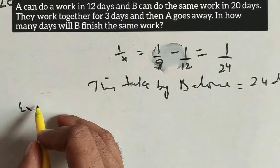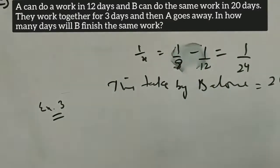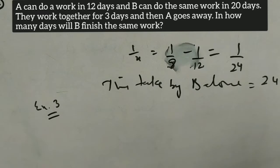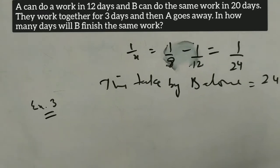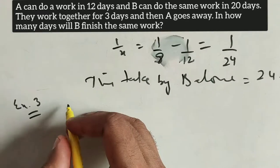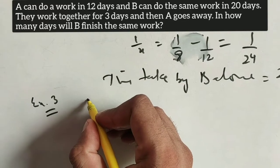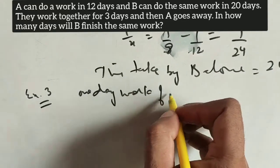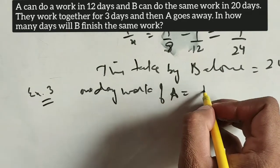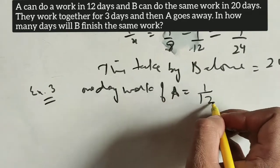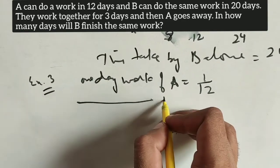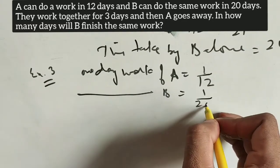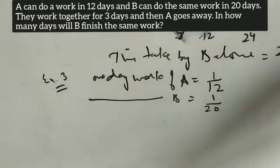Example 3: A can do the work in 12 days, so A's 1-day work is 1/12. B can do it in 20 days, so B's 1-day work is 1/20. They work together for 3 days.